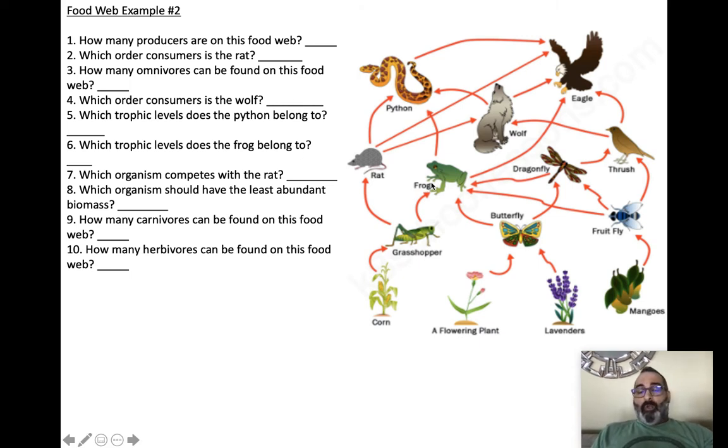Which trophic levels does the frog belong to? All right. There's two ways to get to the frog. There's more than two ways to get to the frog. There's a few ways to get there. So zero, one, two. It's a two. Zero, one, two. Zero, one, two. Zero, one, two, three. So the frog is a two and a three. Two and a three.